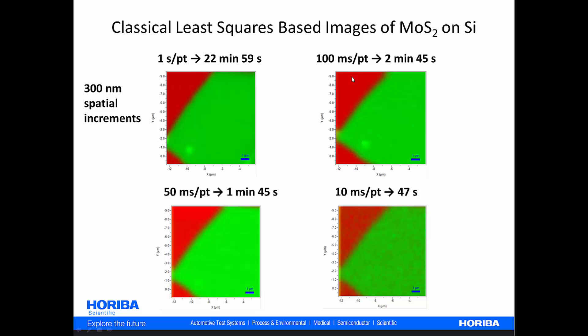Now, here are those same datasets treated to classical least squares algorithm. And you could see that if we now incorporate the entire spectrum in this CLS routine, we really don't lose nearly as much of the quality, the contrast, and the signal to noise in the image as we go from one second per point to 100 milliseconds per point, all the way down to 10 milliseconds per point. So, just take in for a moment the difference here. We're talking about an image that required 23 minutes to generate here. And down here, 47 seconds. That's a pretty substantial improvement in speed for being able to generate the images.